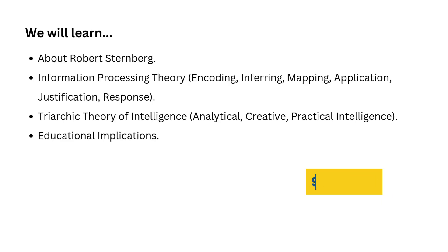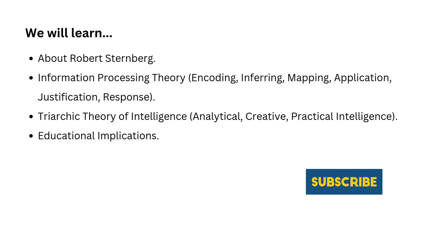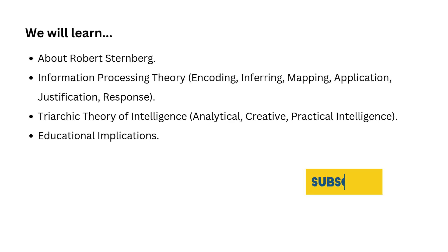Here is what we are going to learn and understand in simple explanation. We will begin by learning about who Robert Sternberg is and what he has contributed to the field of psychology. Then we will explore his information processing theory, which gives us a detailed look at how we solve problems step by step. After that, we will dive into his most famous concept, the triarchic theory of intelligence, which breaks intelligence into three areas. Finally, we will wrap up by discussing how all this applies to education, because understanding intelligence impacts how we learn and how teachers can help students succeed.